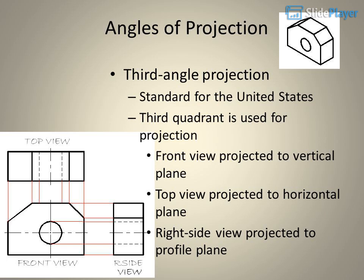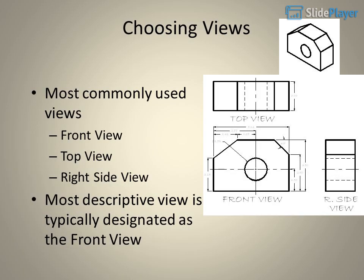Third angle projection is the standard for the United States. The third quadrant is used for projection. The front view is projected to the vertical plane, the top view is projected to the horizontal plane, and the right side view is projected to the profile plane.